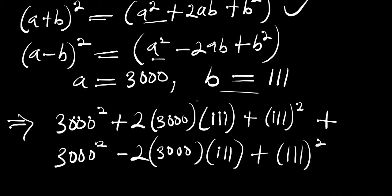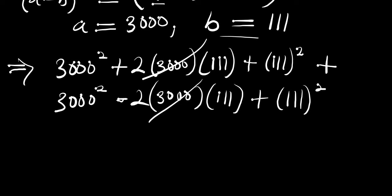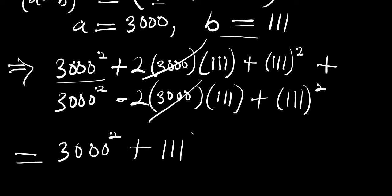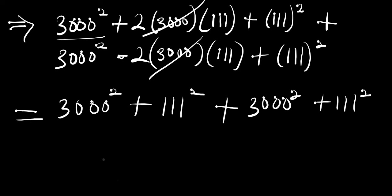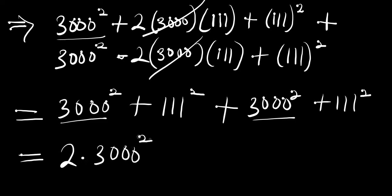If you look at what we have here, the 2ab terms cancel because one is negative and one is positive. So we are left with 3000 power 2 plus 111 power 2, plus 3000 power 2 plus 111 power 2. Collecting like terms gives us 2 times 3000 power 2 plus 2 times 111 power 2.